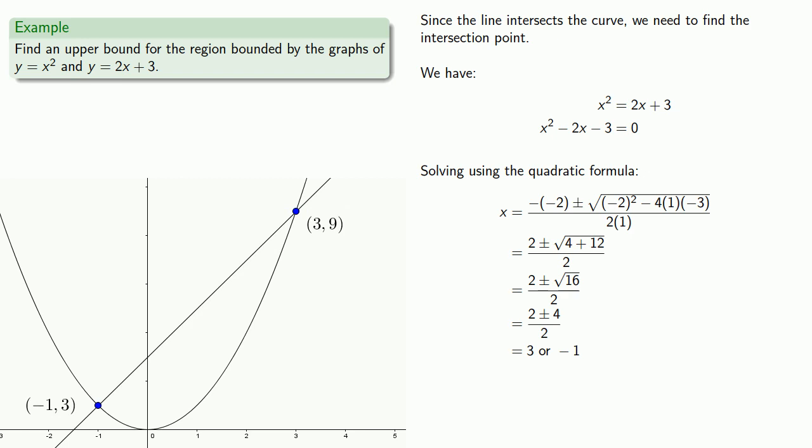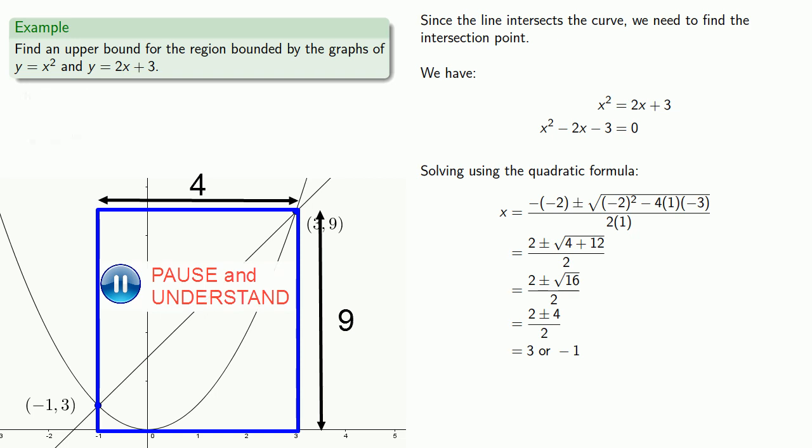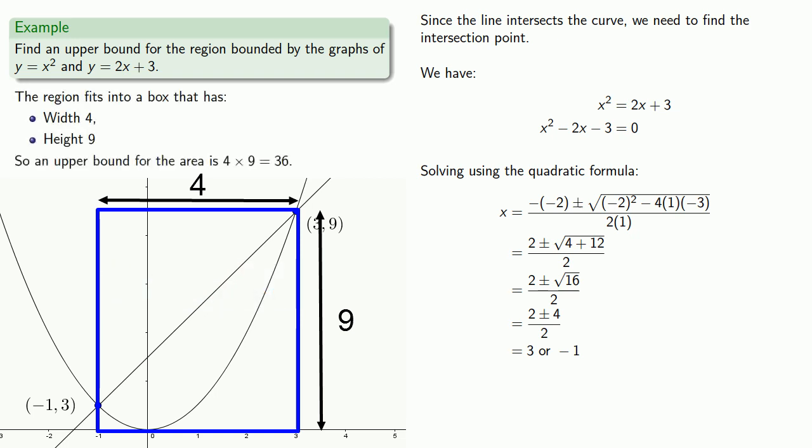So we could try to find a box that the region fits into. And at this point there's not really a whole lot of advantage in trying to get things too exact. So let's throw this into a fairly large box that has a width of 4 and a height of 9, and so this will give us an upper bound for our area of 36.